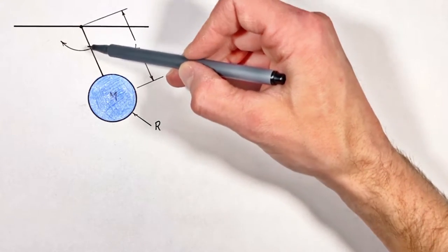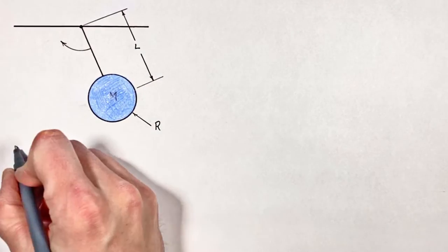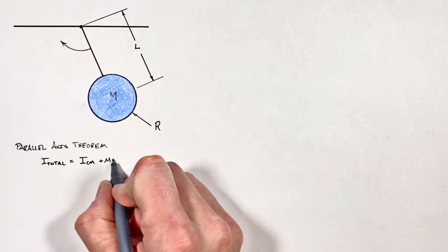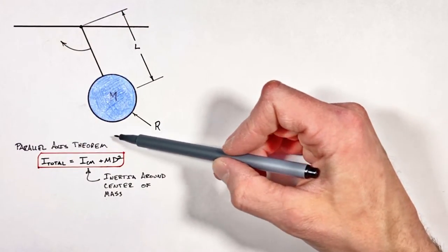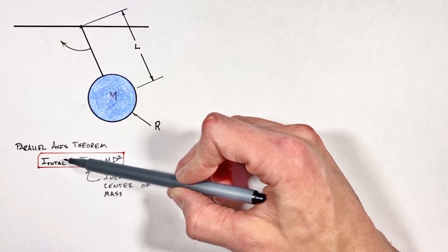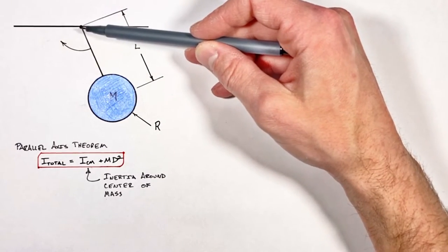a point up here which is some distance L away from the center of the cylinder. Now the parallel axis theorem tells us the total rotational inertia when we rotate an object like this cylinder around an axis which does not pass through its center of mass.